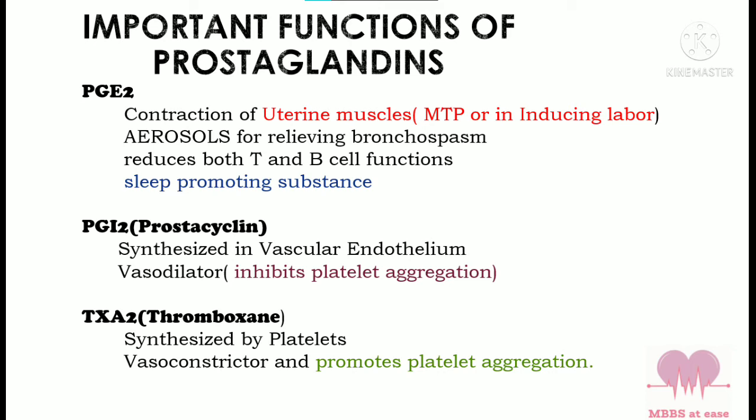The most important prostaglandin in our body is PGE2. It helps in the contraction of uterine muscles during medical termination of pregnancy or in inducing labor. It acts as an aerosol for relieving bronchospasm. It reduces both T and B cell function, and it is a sleep-promoting substance.